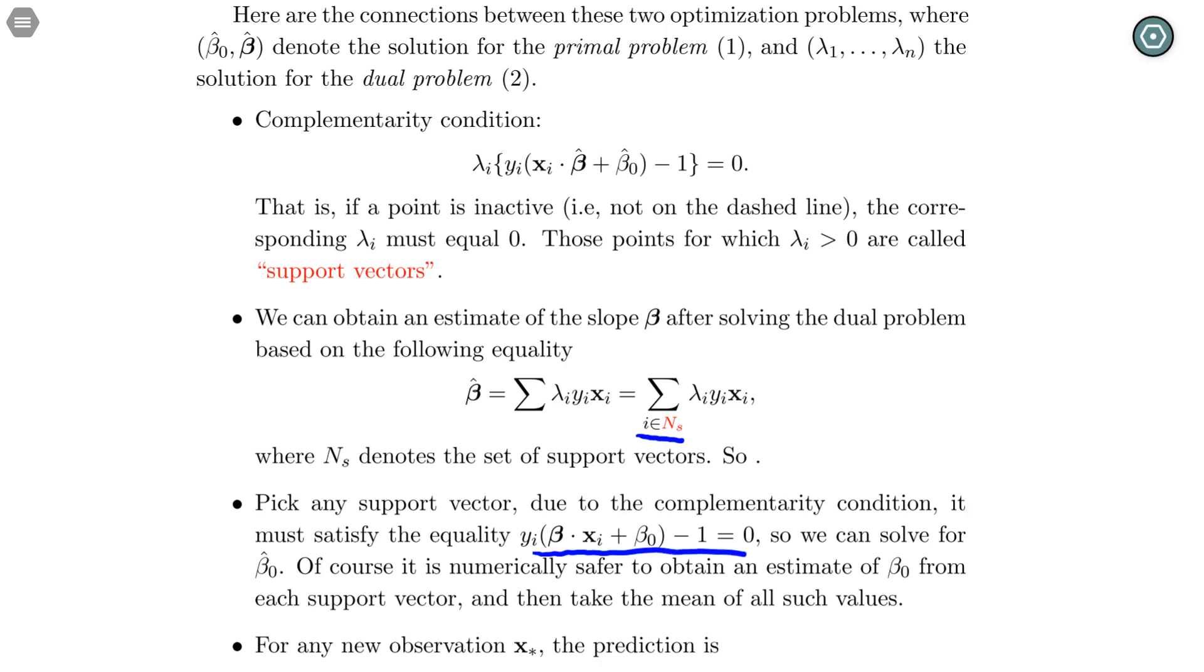And sometimes for computational stability, people will solve multiple beta_0 because we can obtain one beta_0 based on one support vector, each of the support vectors. And in theory, they should all be the same, but in practice, they might be slightly different, then we can average them.